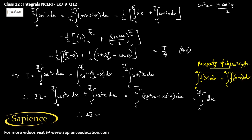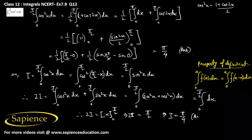Therefore, 2I equals x evaluated from 0 to π/2, which gives π/2. So I equals π/4. This confirms the answer using the property of definite integrals. Both methods — converting cos²x using the double angle identity, or using the integral property — give the same final answer of π/4.